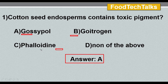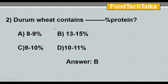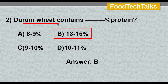Second question: durum wheat contains what percentage of protein? Options are: A) 8 to 9%, B) 13 to 15%, C) 9 to 10%, D) 10 to 11%. The answer is option B, 13 to 15%. Durum wheat contains 13 to 15 percentage of protein.